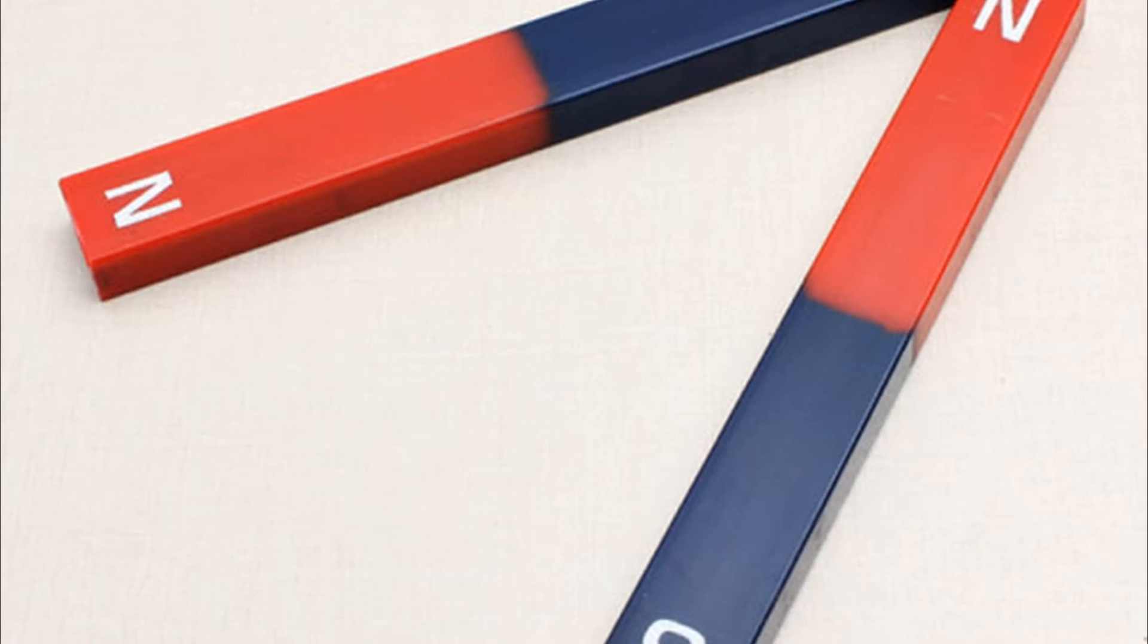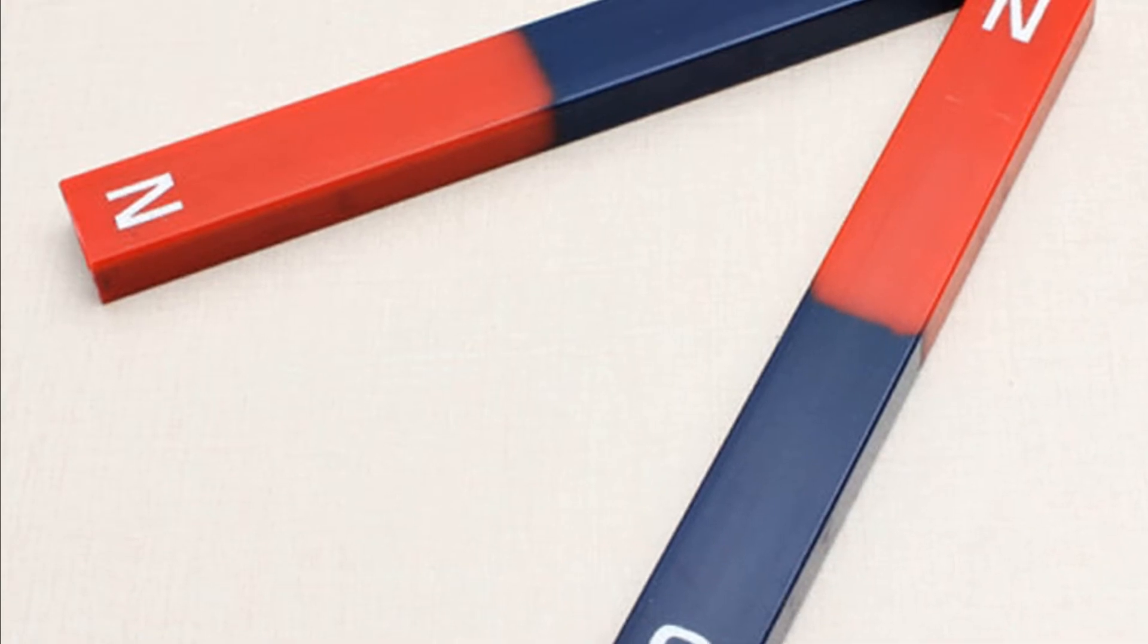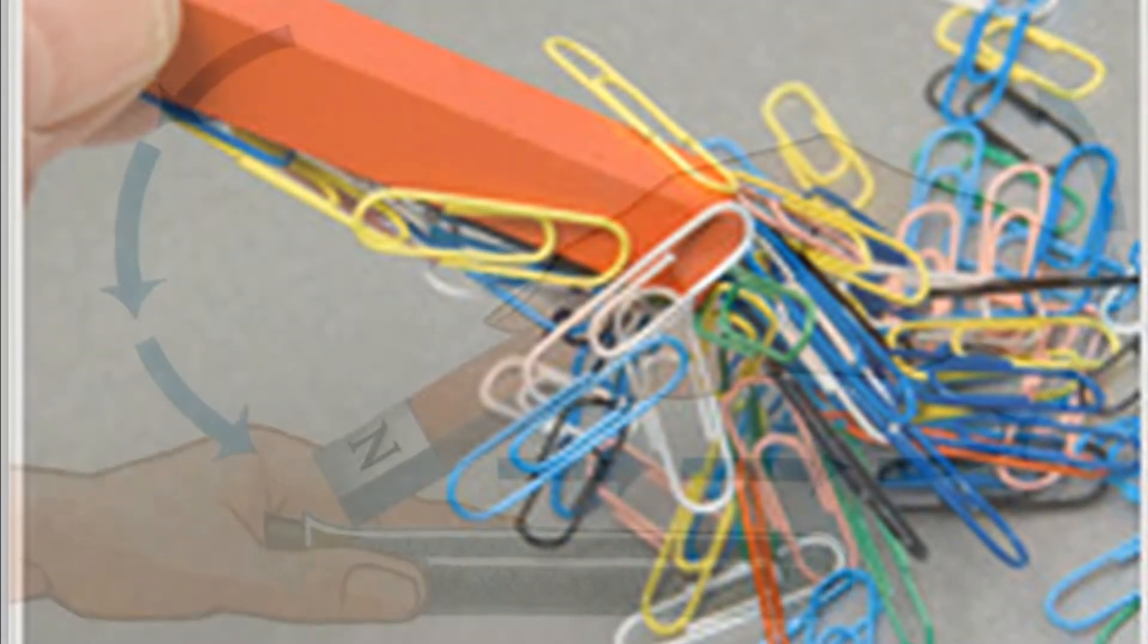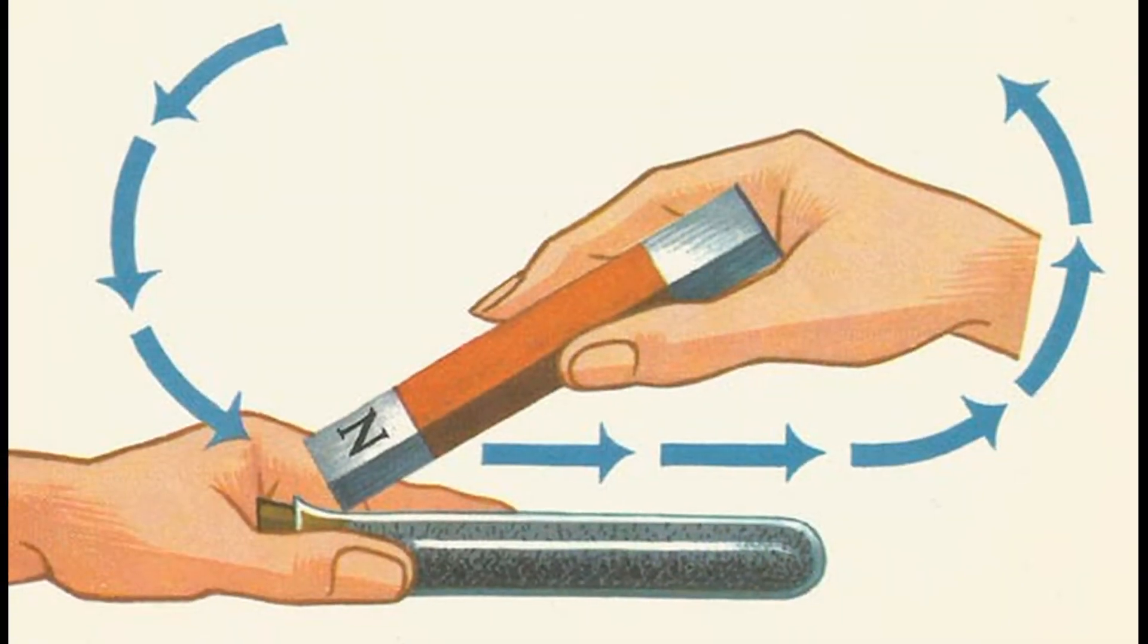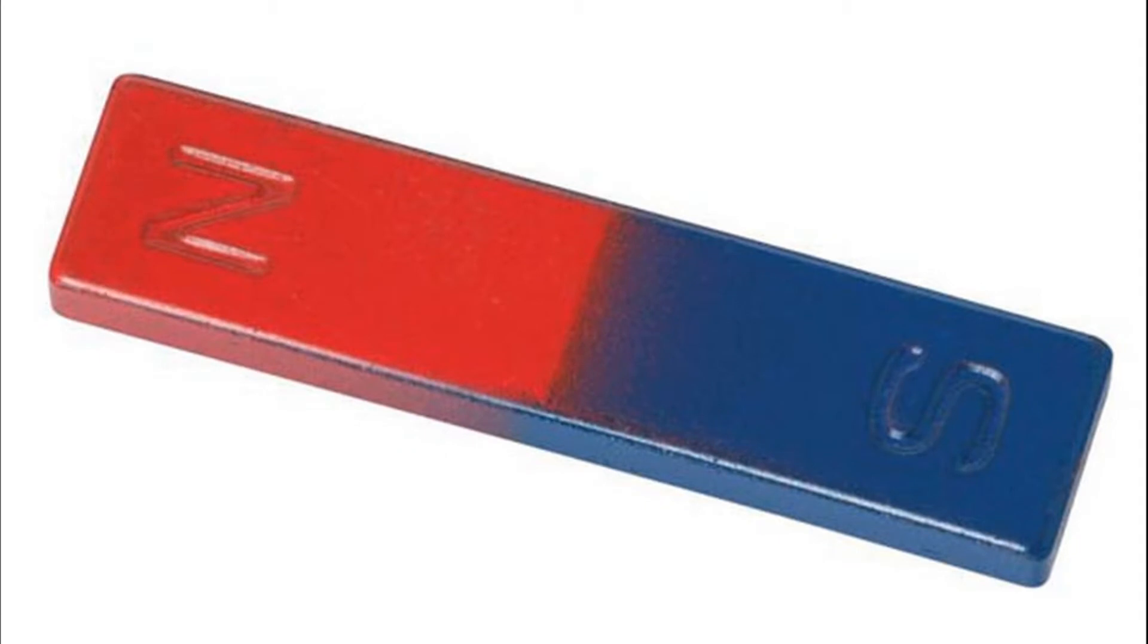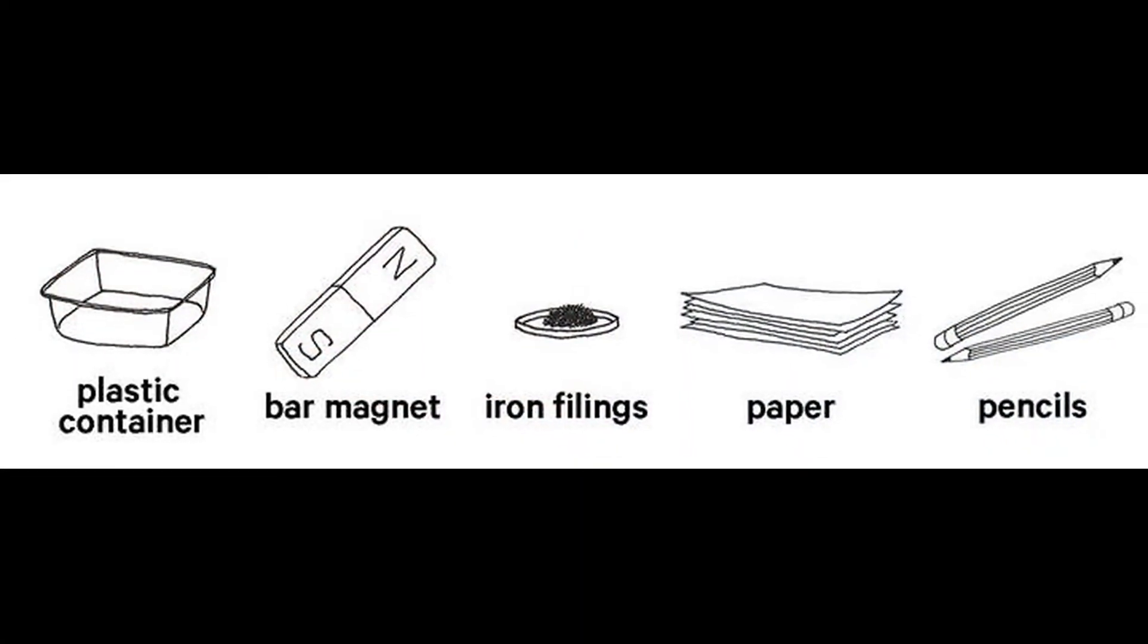Attractive property of magnets. You can carry out the following experiments using a bar magnet. Bring any one end of a bar magnet near iron fillings and steel pins. Bring any one end of a bar magnet near knife with stainless steel blade. Bring any one end of a bar magnet near articles made of plastic, glass and paper.